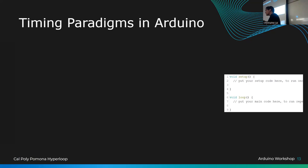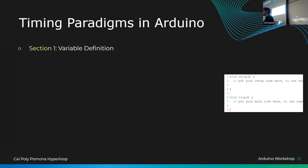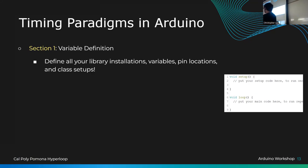The word 'paradigm' just means pattern. In Arduino there are three sections in your code. First: variable definition — put any variables and library imports at the very top, just like in C. Libraries are also imported at the very top. The comment says: define all your library installations, variables, pin locations, and class setups in this location.